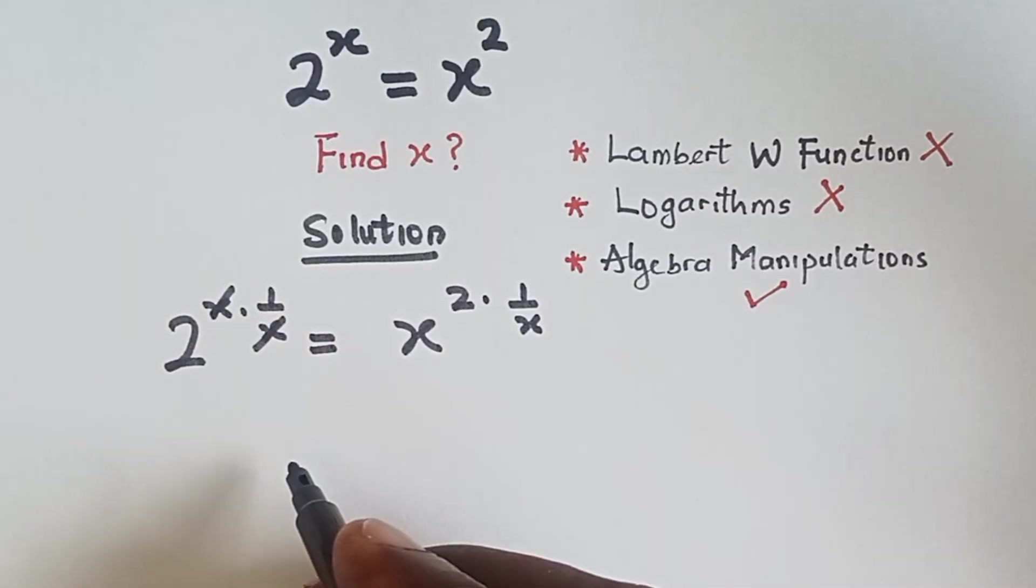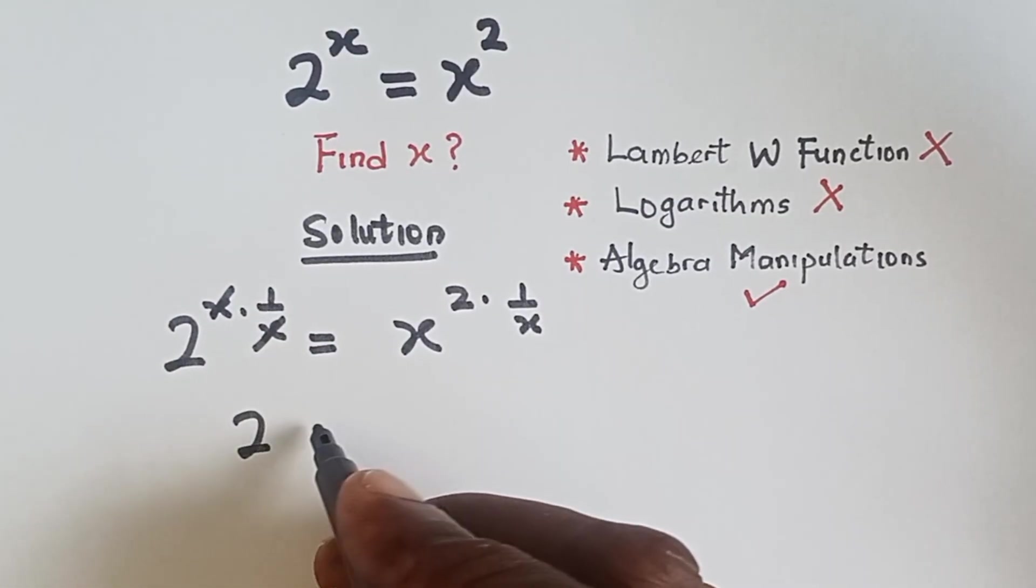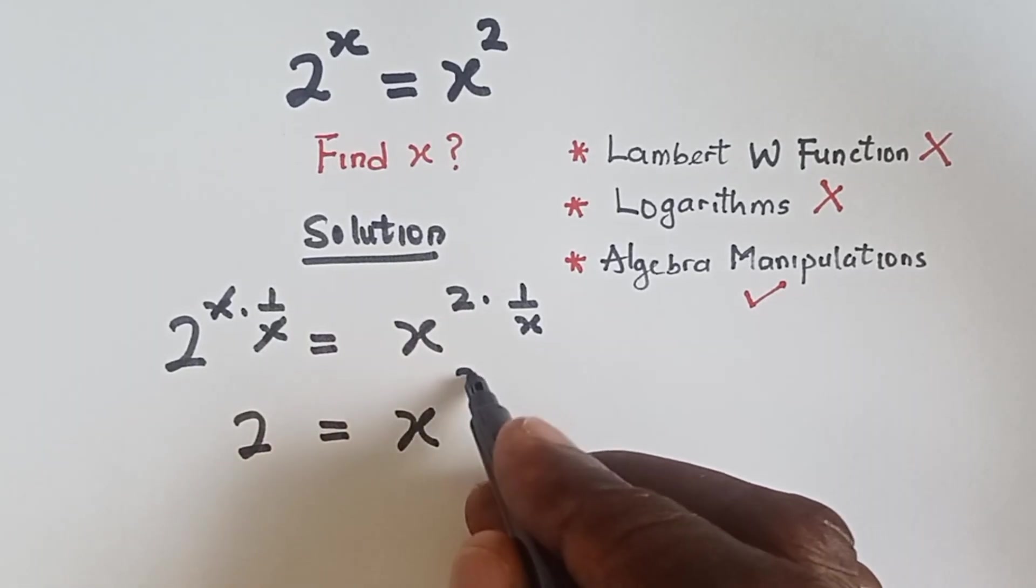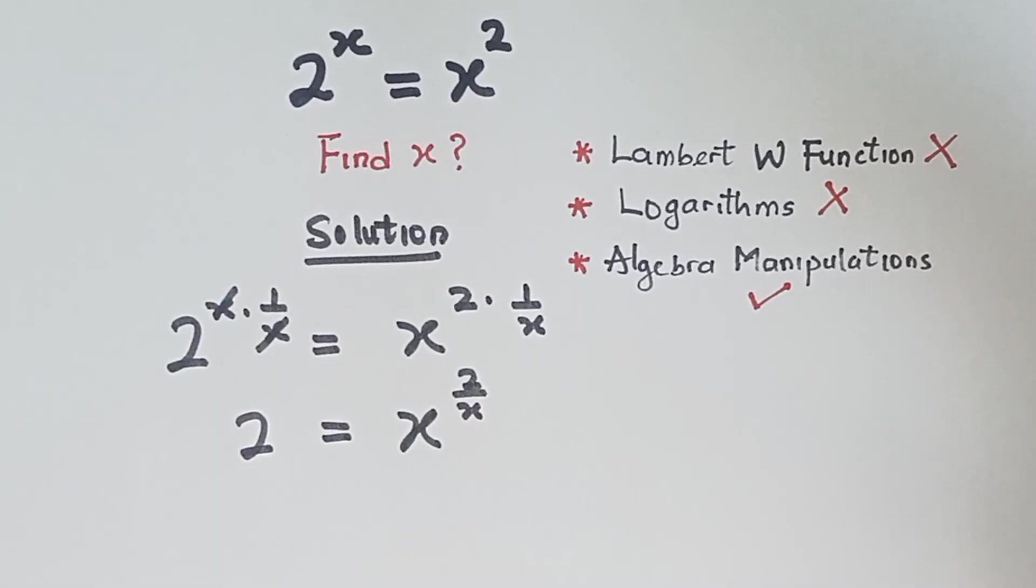The x cancel this and we have 2 raised to the power 1 which is 2 equals to this becomes 2 over x. Alright,